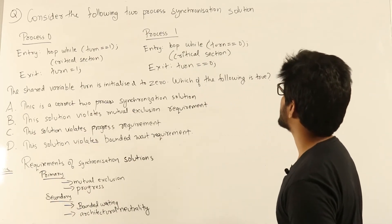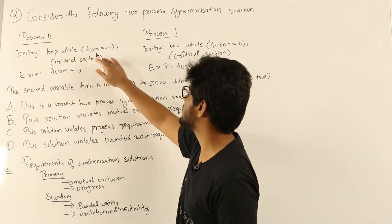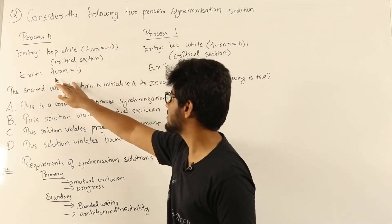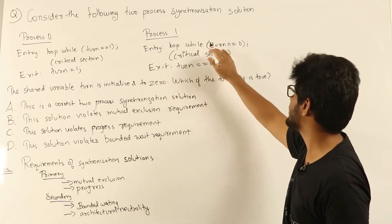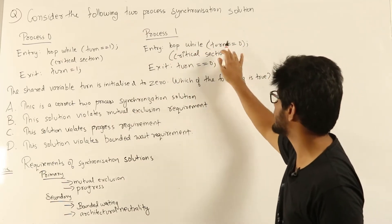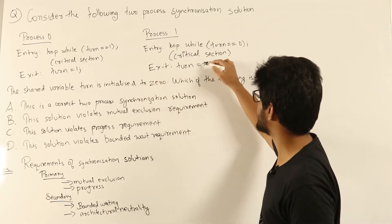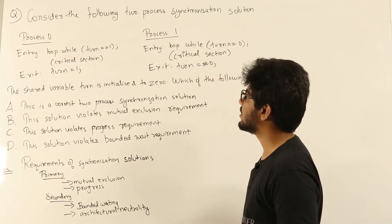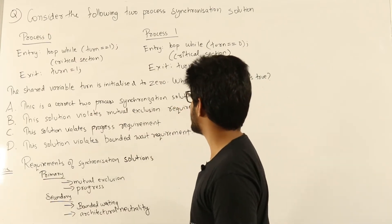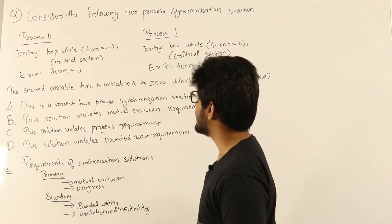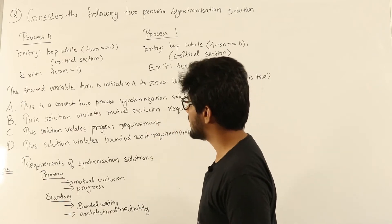Consider the following two-process synchronization solution. Process zero entry: loop while turn equals 1, then critical section, exit: set turn equal to 1. Process one entry: loop while turn equals 0, then critical section, exit: set turn equal to 0. The shared variable turn is initialized to zero. Which of the following is true? A: this is a correct two-process synchronization solution. B: this solution violates mutual exclusion requirement. C: this solution violates progress requirement. D: this solution...